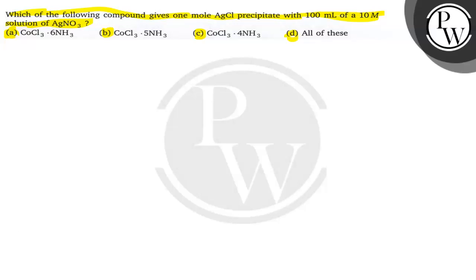Let us solve this question. See the first complex. This can be written as [Co(NH3)6]Cl3 - cobalt, ammonia 6, coordination number 6. It is complete. Remaining ligands are outside the coordination sphere, that is Cl3.